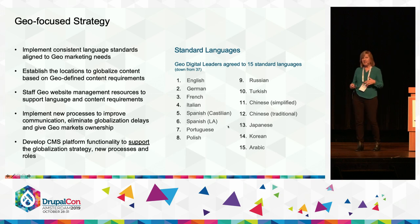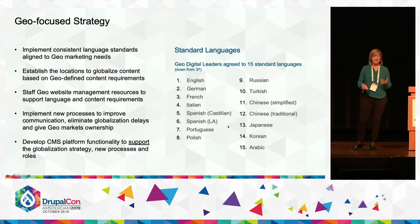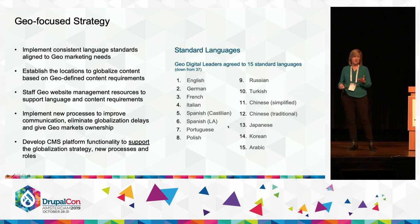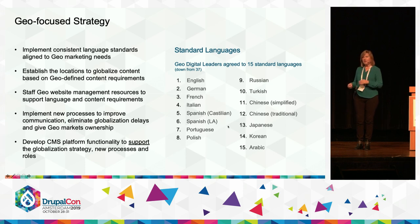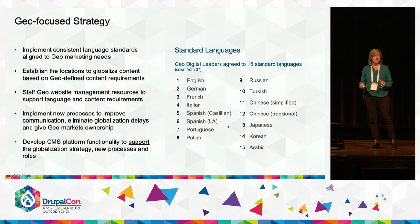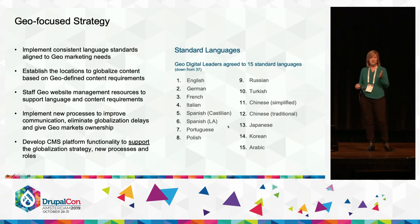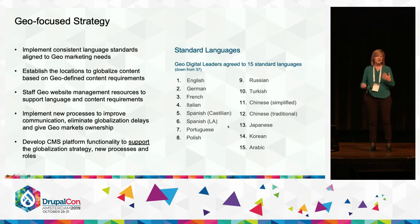Next, we decided on the locales — the countries and regions that were important. We went out to the geographies and talked about their traffic, their revenue, where they see emerging markets and declining markets, where we really need to have content versus just a brand presence. After we knew the languages and countries we wanted to support, we set up the staffing model, followed by a whole new set of process improvements to make globalization run much quicker. At the end, we gave ownership of the pages going into the market to the new resources we put in place. And intentionally last, we worked with our engineering team to customize our Drupal implementation to support all of our needs.